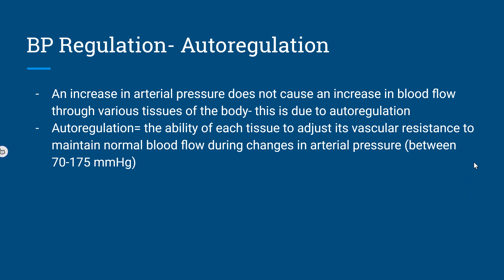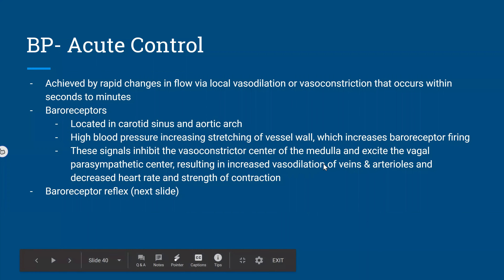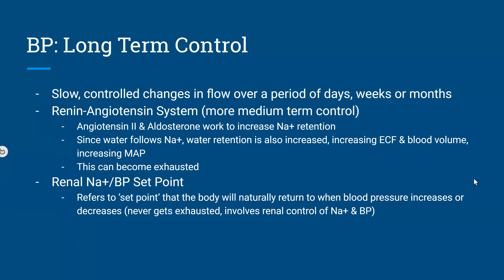Autoregulation is achieved by rapid changes in flow through local vasodilation and vasoconstriction. Baroreceptors are located in the carotid sinus and the aortic arch. When blood pressure is high, increased vessel wall stretching increases baroreceptor firing; signals travel to the medulla and inhibit vasoconstriction, while exciting the vagal parasympathetic center, resulting in increased vasodilation and decreased heart rate.